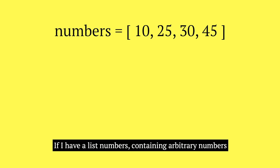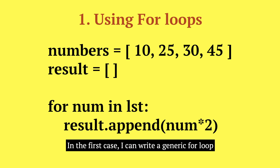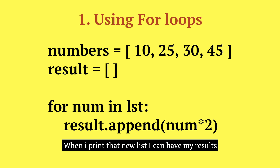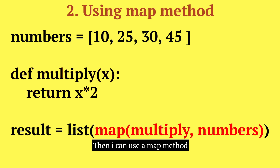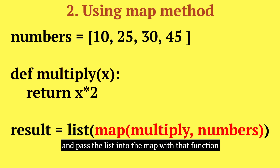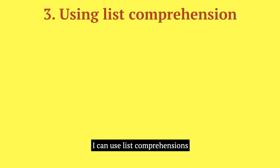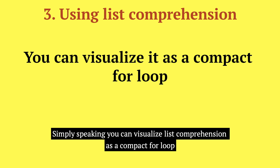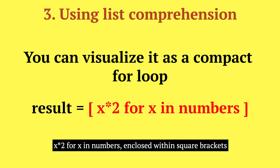If I have a list of numbers containing arbitrary numbers and I want to multiply every number by 2, I can write the code using three methods. First, I can write a generic for loop that multiplies every element in that list by 2 and returns it to an empty result list. Second, I can define a function that takes a number as an argument and returns double that number, then use the map method and convert the result to a list. The third way is using list comprehensions — you can visualize a list comprehension as a compact for loop. I can translate the for loop to: [x * 2 for x in numbers]. When printed, I get the desired output.